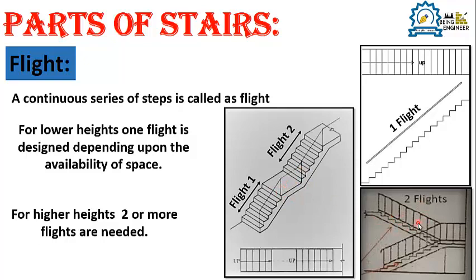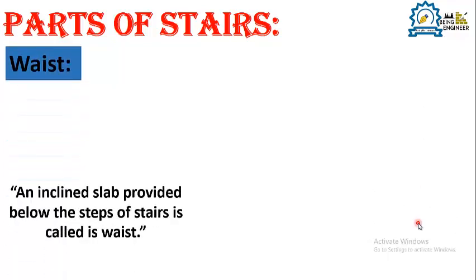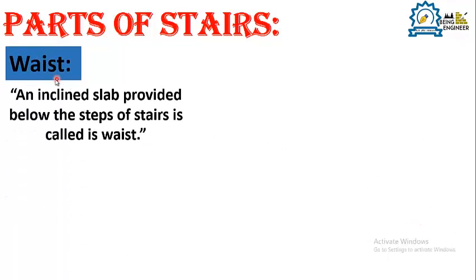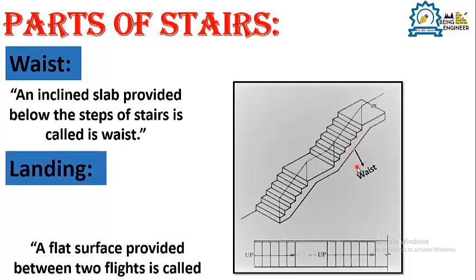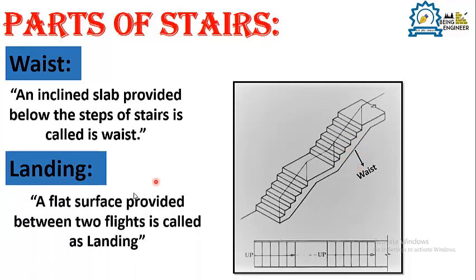The next component is waist. What is waist? An inclined slab provided below the steps of stairs is called a waist slab. As you can see in this picture, the lower part of the staircase — the slab underneath the steps — is called the waist.